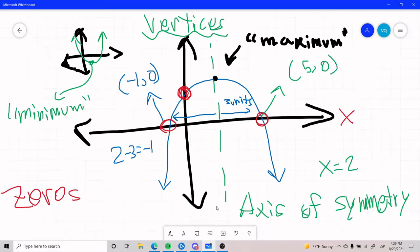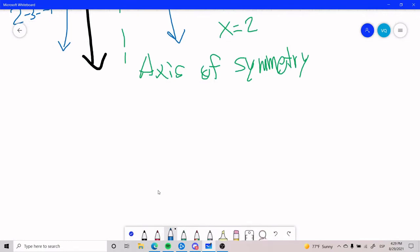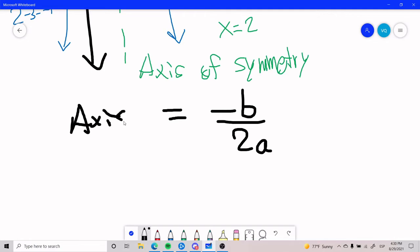The formula for axis of symmetry is the following: it is negative b over 2a. If you plug in negative b over 2a, you will get the value of the axis of symmetry, which, in other words, will give you an x value, like this one here.